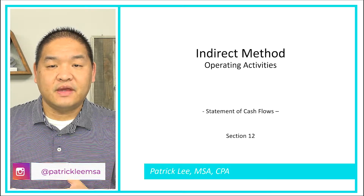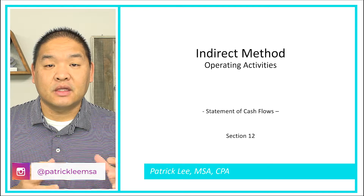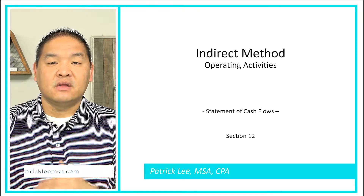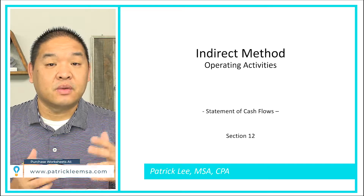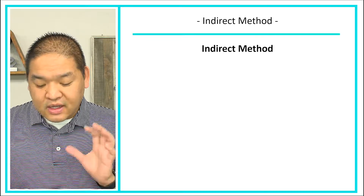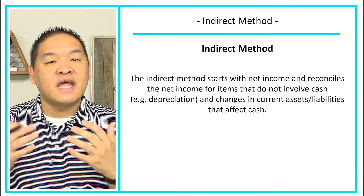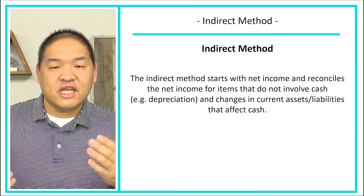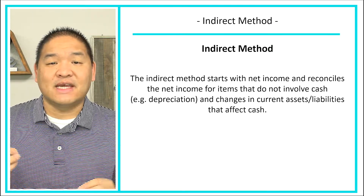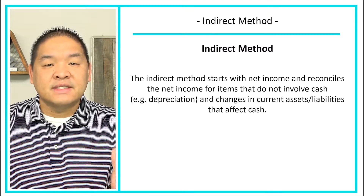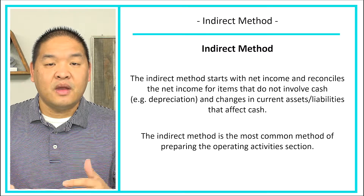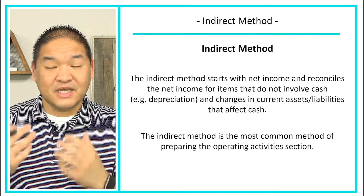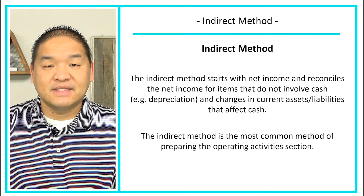In this lesson we're going to go over the indirect method for the operating section of the statement of cash flows. We're going to talk about the theory, then the mechanics, and then actually do one towards the end. The indirect method starts with net income and then we adjust it with non-cash expenditures and changes in current assets and current liabilities. This is the most common method of preparing the operating section of the statement of cash flows.